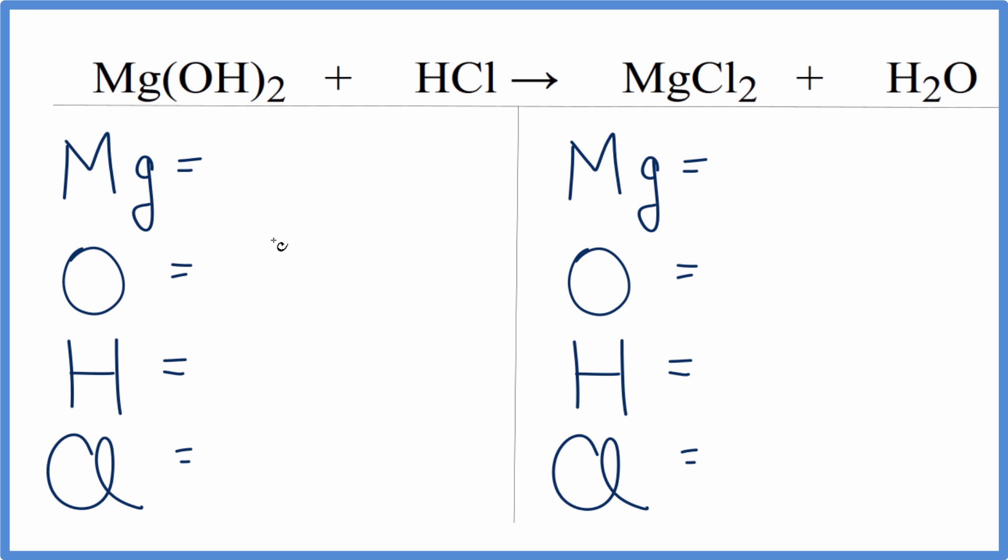To balance the equation, we count the atoms up and make them equal on both sides. We have one magnesium atom. For oxygen, this 2 applies to everything in the parentheses, so 2 times 1 equals 2 oxygens. For hydrogens, 2 times 1 equals 2 hydrogens, plus this hydrogen here gives a total of 3 hydrogens, and then 1 chlorine.